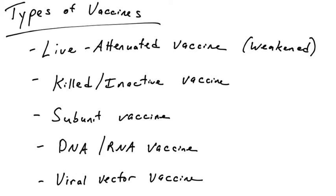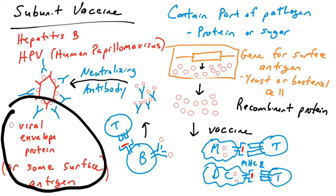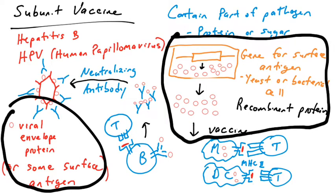In our previous video we talked about subunit vaccines. In these vaccines, the goal was to find a surface antigen — some molecule that you would like the immune system to recognize, identify, and mount an immune response to, such as a neutralizing antibody response. You take the gene for that protein, put that gene into some organism in the laboratory such as a yeast cell, generate that protein in the lab, and inject that protein into individuals hoping they will make an immune response to that protein.